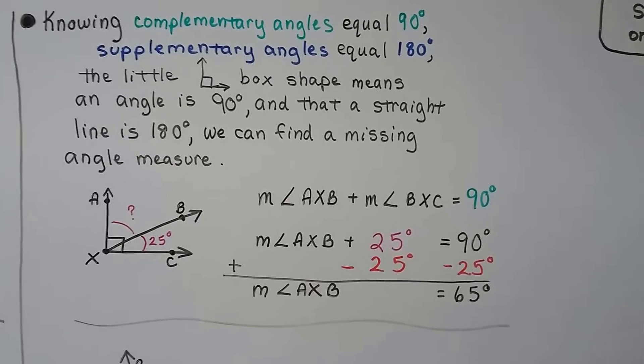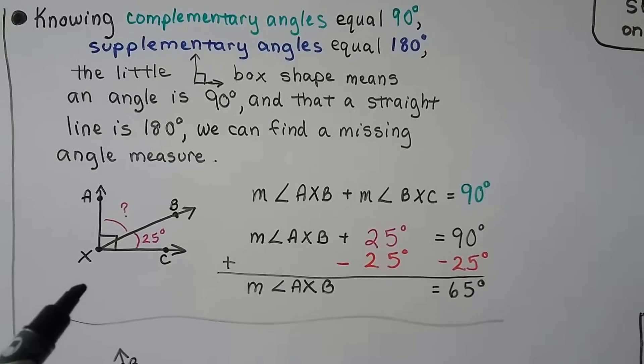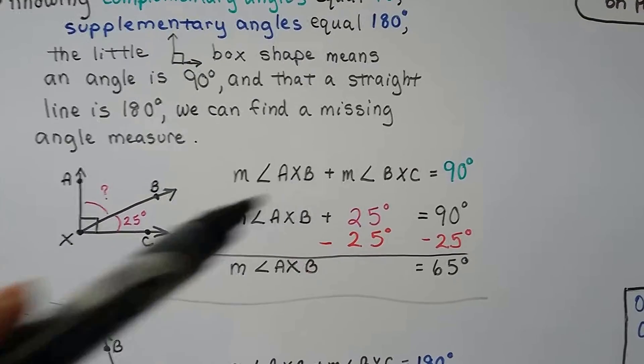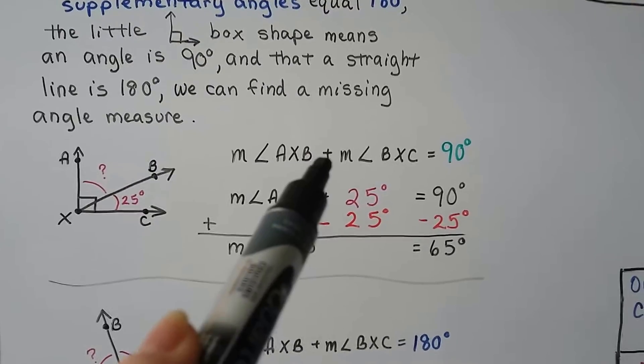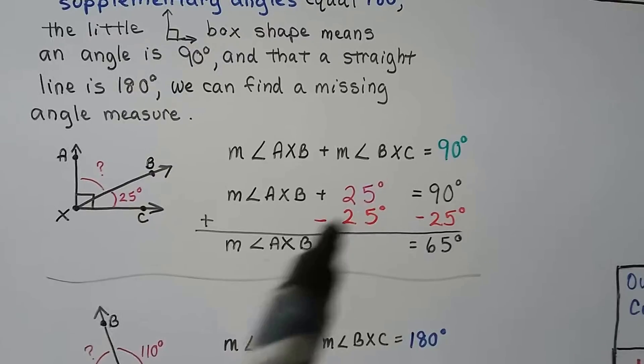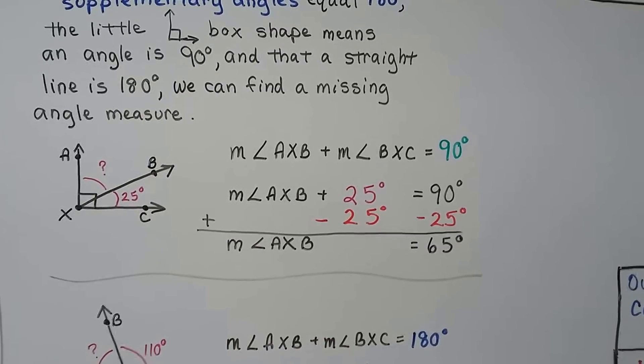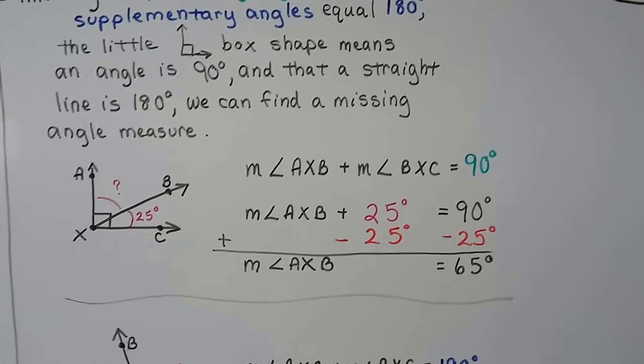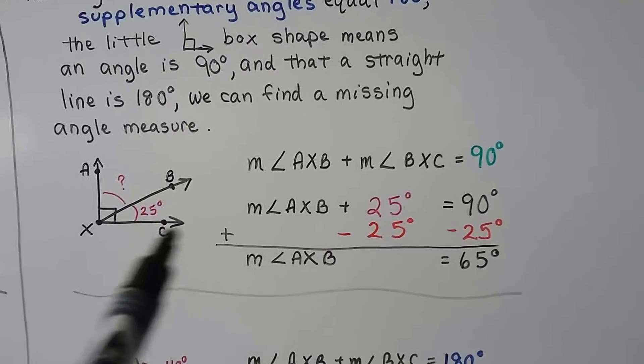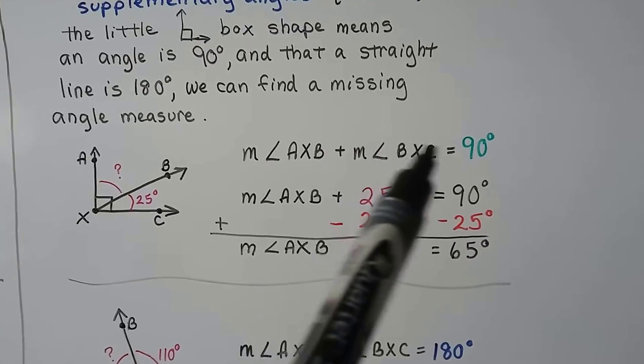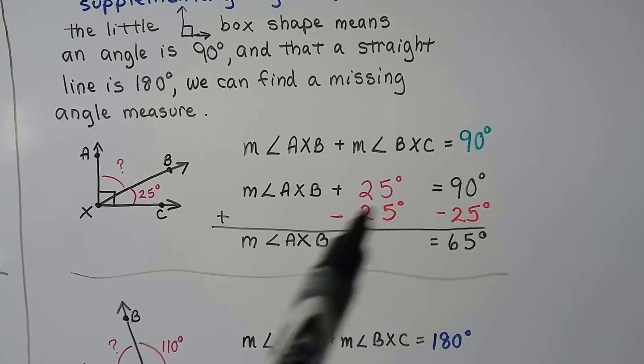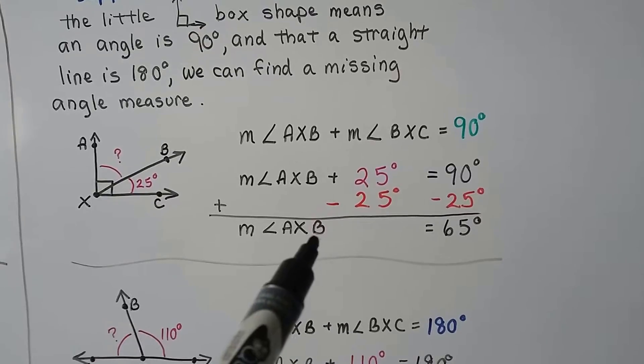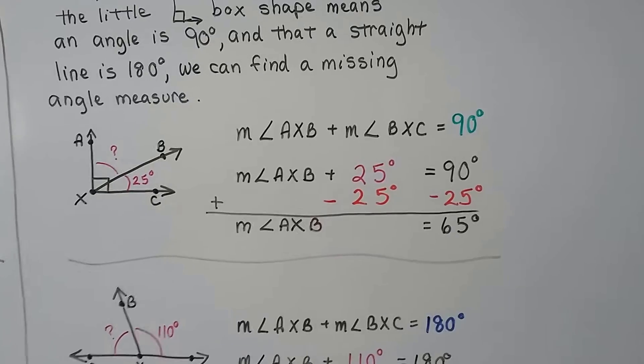I know you could quickly go in your head, oh, 90 take away 25, it's going to be 65. But I'm trying to get you familiar with these equations. So they would write the measure of angle A, X, B, plus the measure of angle B, X, C, should equal 90 degrees. Because that's a right angle here, and we know they're 90 degrees. So using what we've learned from algebra, we can make zero pairs. If this is 25 degrees, we put the 25 degrees in place of this measure of angle B, X, C, and we can add a negative 25 degrees to each side of the equation. That creates a zero pair here, and it gets eliminated. Now we know the measure of angle A, X, B is equal to 65 degrees.